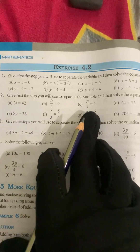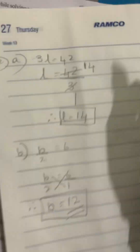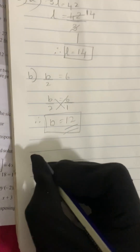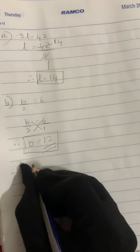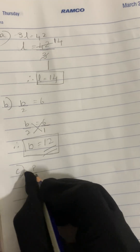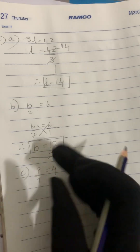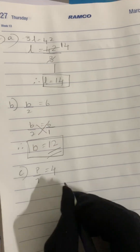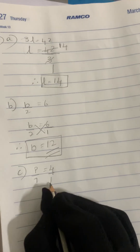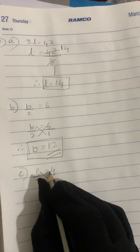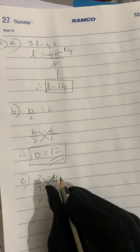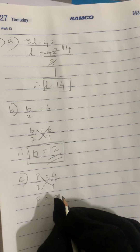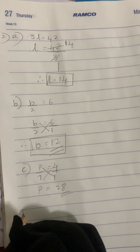Now let's solve the third question: B divided by 7 equals 4. Same as the previous one. We put denominator 1, do cross multiplication: B into 1 is B, and 7 fours are 28. So B equals 28 is our answer.